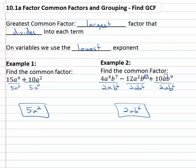So that's how we can identify the greatest common factor. We find the largest number that divides into each term, and for the variables that are in common we use the lowest exponent.